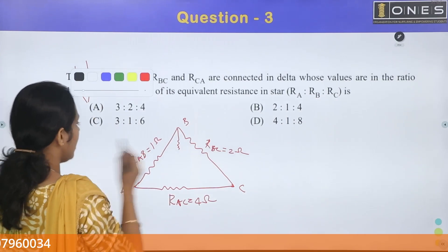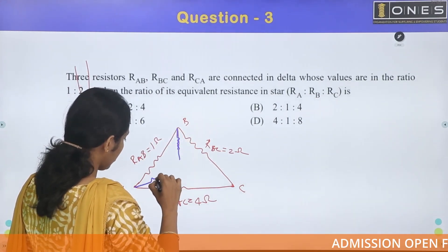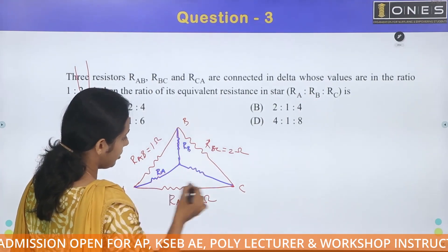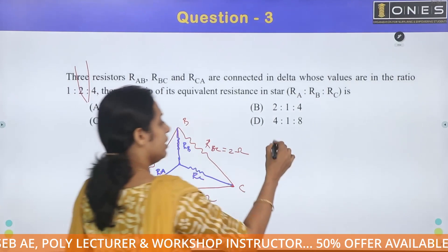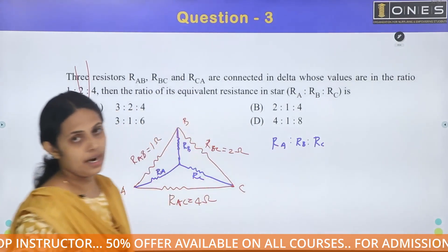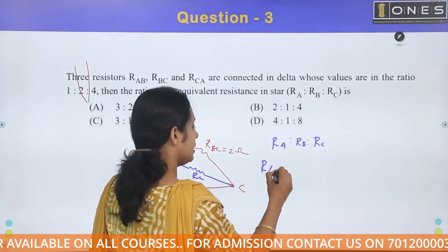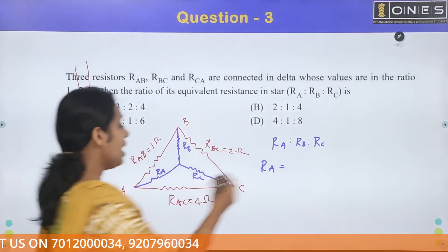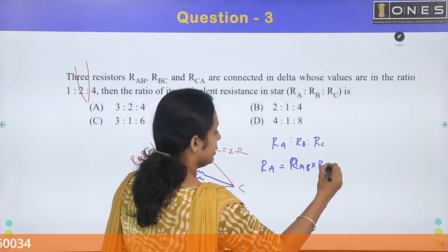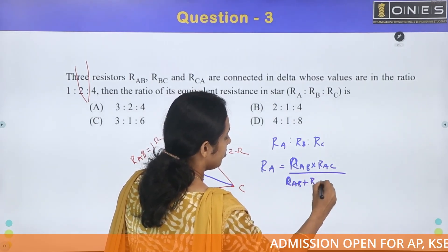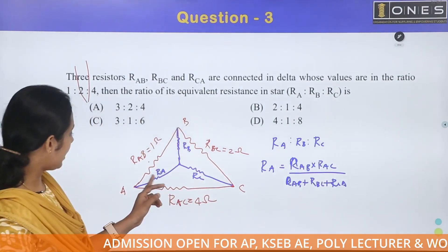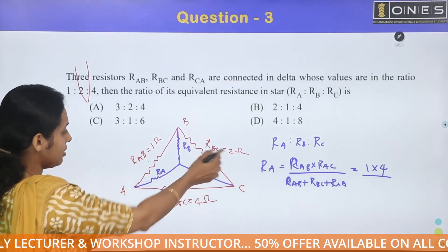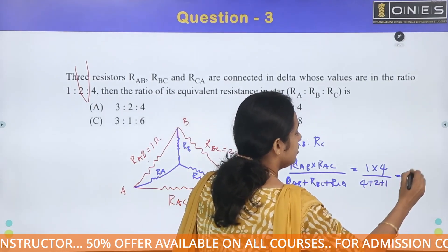Converting delta to star, the total resistance is RAB + RBC + RCA = 1 + 2 + 4 = 7 ohm. Using the delta-to-star formula, RA equals RAB × RCA divided by total resistance, which is 1 × 4 divided by 7, giving RA = 4/7 ohm.